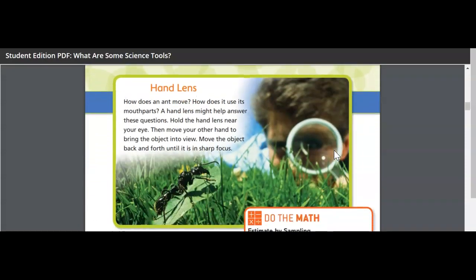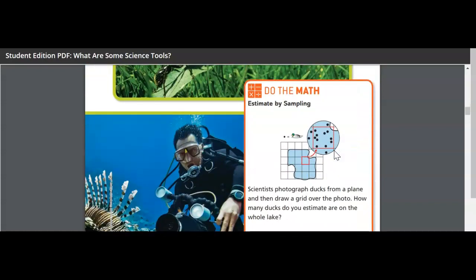Hand lens, another tool. How does an ant move? How does it use its mouth parts? A hand lens might help answer these questions. Hold the hand lens near your eye. Then move your other hand to bring the object into view. Move the object back and forth until it is in sharp focus. A magnifying glass is what we might call it.